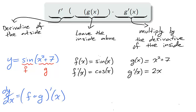Using the chain rule to find the derivative of y with respect to x, that is, the derivative of the composition f of g, we begin with the derivative of the outside, leaving the inside alone, and we multiply by the derivative of the inside.